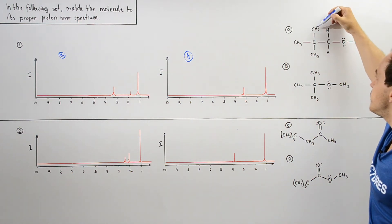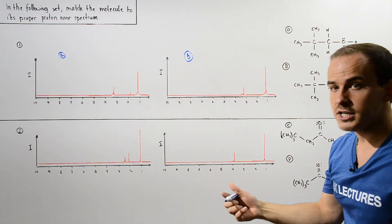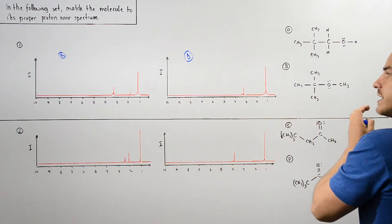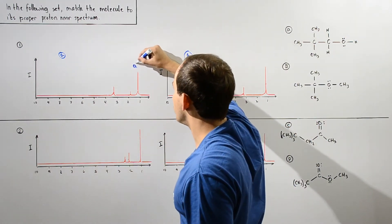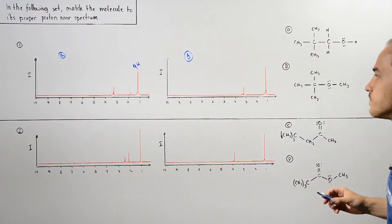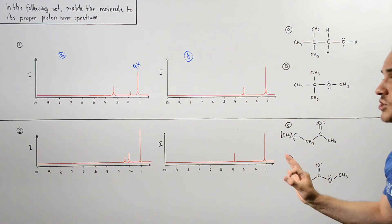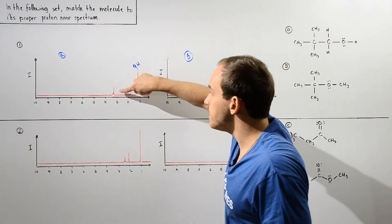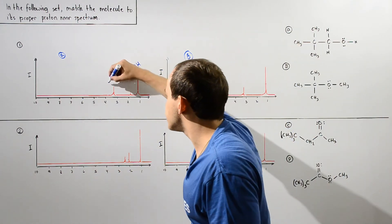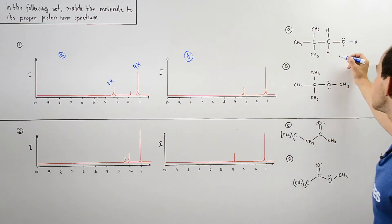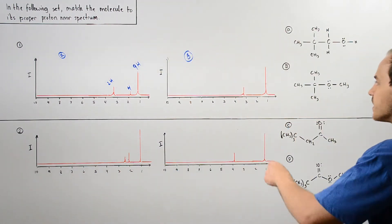If we examine these H's, they have a great deal of electron density which will act to shield them, placing them all the way to the right — upfield — along the X axis. That means these nine H's correspond to the signal found all the way upfield. The height or intensity of a peak basically signifies the relative quantity of H atoms, so because this signal is smaller than this one, these two H's must correspond to the slightly higher signal, while this signal corresponds to the single H.